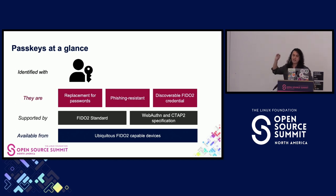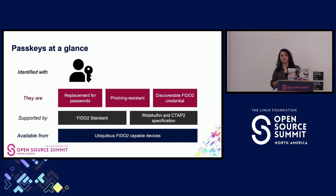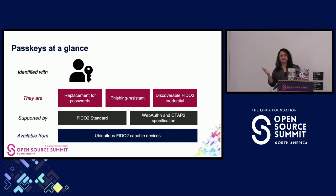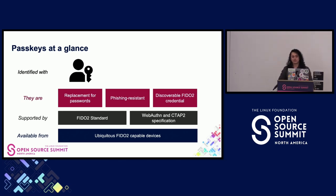Passkeys are a replacement for passwords. They're phishing resistant, and they're a discoverable FIDO2 credential. What's important is the fact that they're a replacement for passwords and that they're phishing resistant. Traditional 2FA solutions — your OTPs from text messages or emails — can be retrieved. If someone performs a SIM swap attack or compromises your email account, they'll get into your account because they'll have your password and access to your OTP codes. Passkeys guarantee that won't happen, because everything is based on the authenticator. Passkeys are supported by the FIDO2 standard and the WebAuthn and CTAP specification.